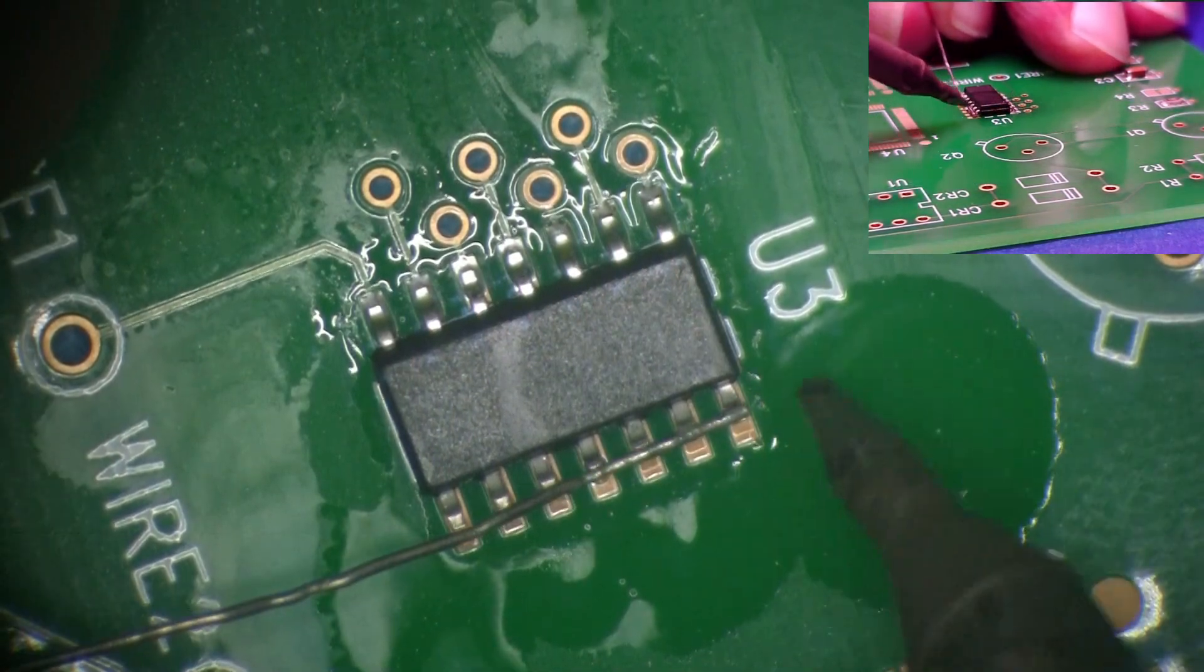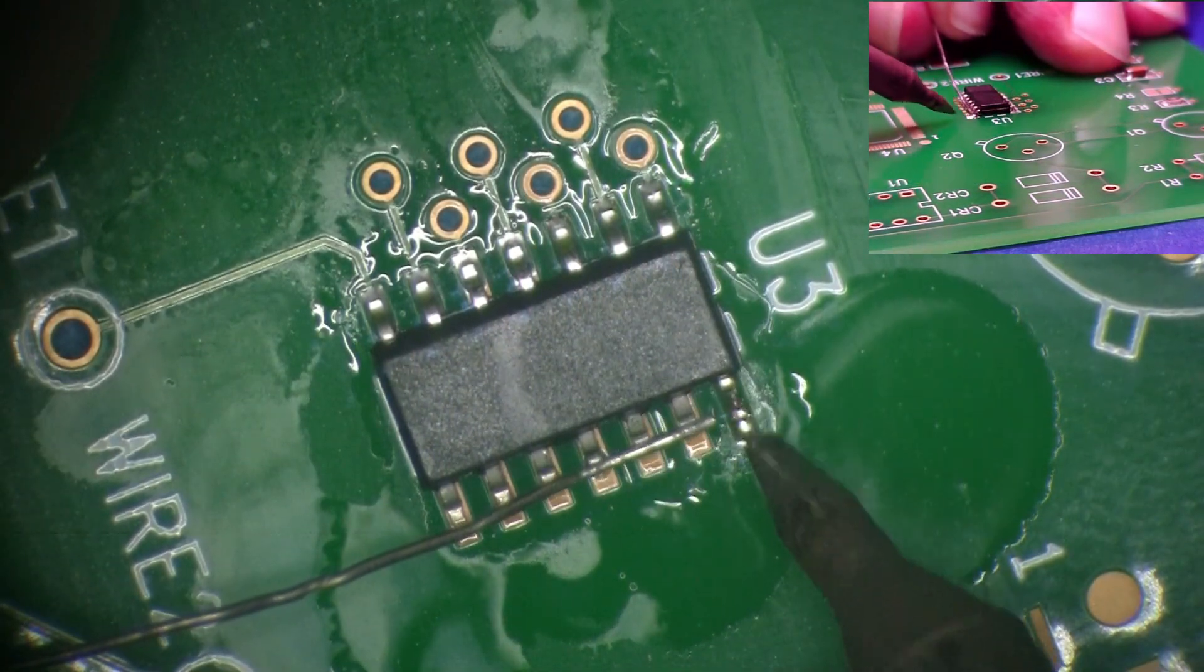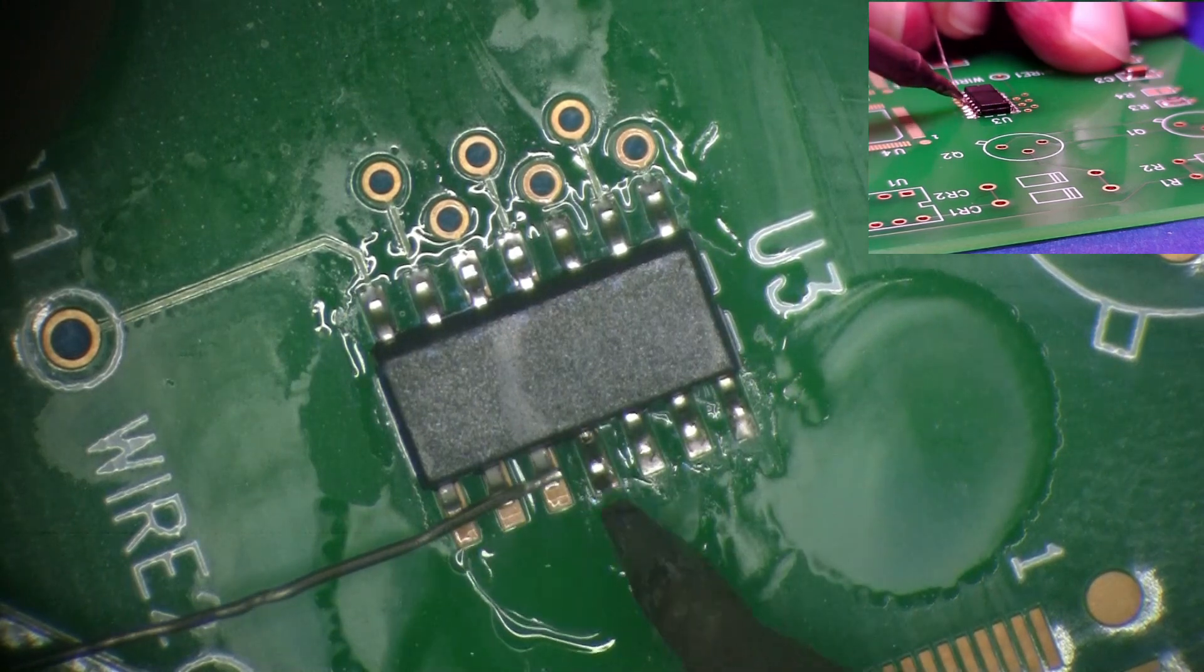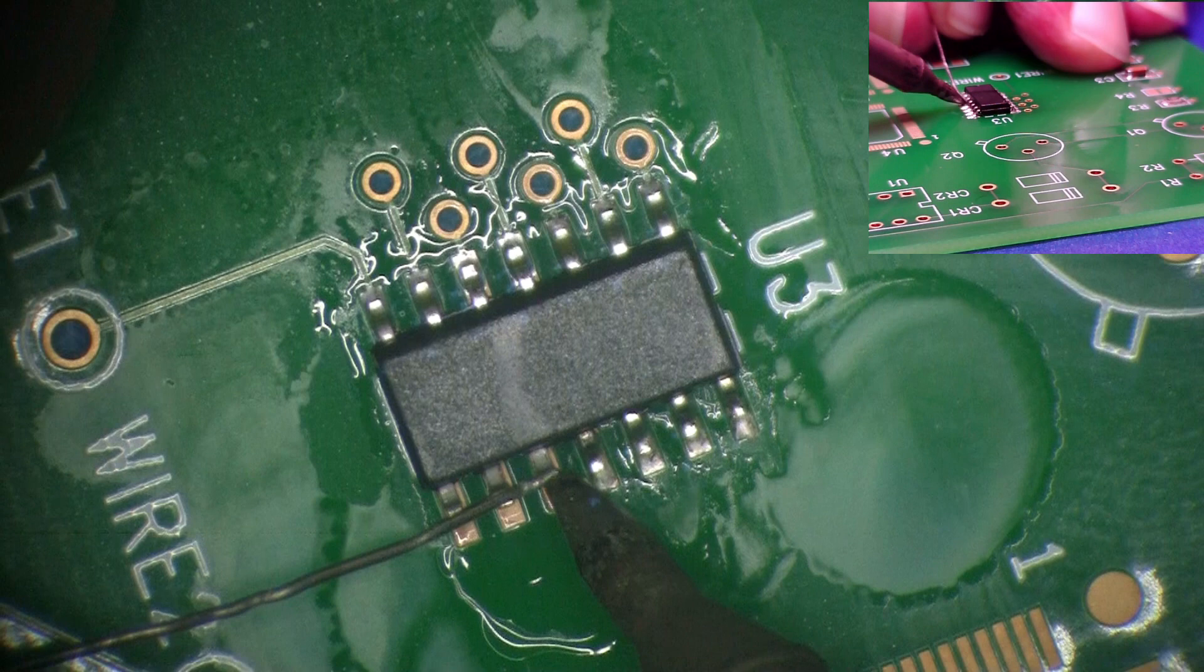Reposition the board again, apply flux, and solder the remaining leads. On this second side, the instructor is using another point-to-point method. Instead of placing the solder on the land, the solder is placed on the top of the lead foot.